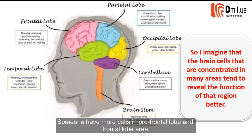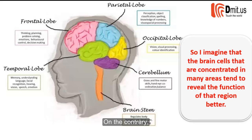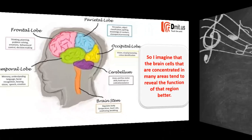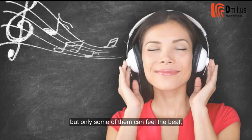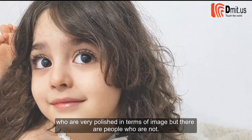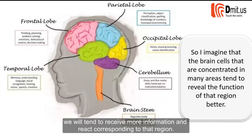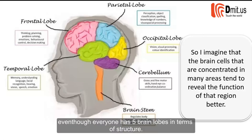Someone who has more cells in the prefrontal lobe and frontal lobe area will process and receive information more sensitively. On the contrary, if they have more focus in the parietal lobe, they tend to like more physical activities. There are people who just like to stay active. When we are excited we will enjoy doing it more. Anyone can listen to music, but only some of them can feel the beat, enjoy, and understand a song — the temporal lobe is extremely sensitive here. There are also people who are very strong in terms of image processing, and there are people who are not. In general, the brain cell distribution in a given area will show our behavior; we will tend to receive more information and react corresponding to that region. The distribution is different for each person, even though everyone has five brain lobes in terms of structure.